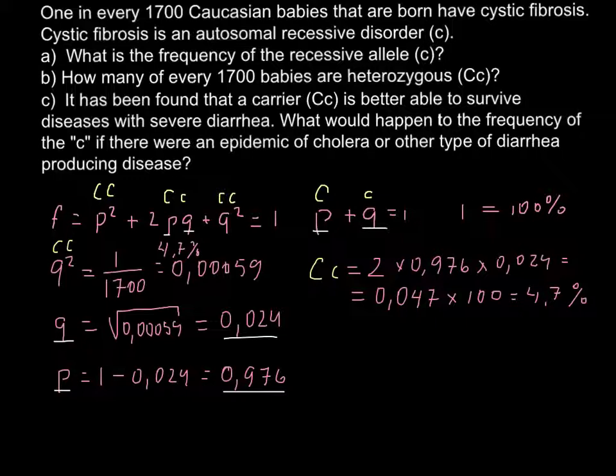The first question was what is the frequency of the recessive allele c? The frequency of the recessive allele c equals q in our formula. q here we already know is 0.024. We can also convert it and give the answer as a percentage. This is 0.024 frequency or 2.4%. This is the frequency of the recessive allele.